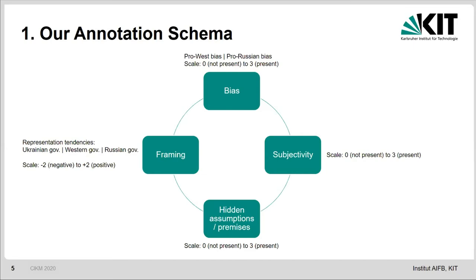Secondly, we use subjectivity. Subjective sentences are opinionated and judgmental in our definition. Since most news articles are not written from a first-person perspective, subjectivity is not expressed in articles in a direct manner. Here we also use a scale from 0 to 3. Then we have hidden assumptions and premises as another bias dimension, which is often used in related work in the context of media bias. Hidden assumptions includes unjustified statements presented as generally accepted, while different views remain unspoken. Here we also use a scale from 0 to 3.